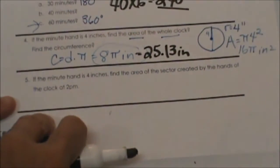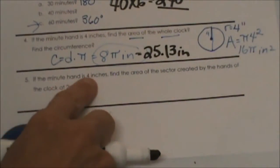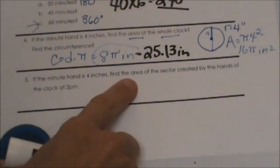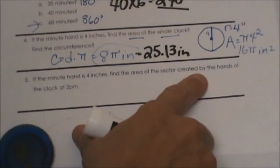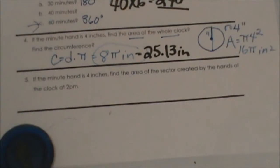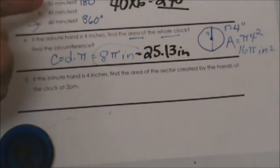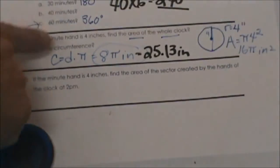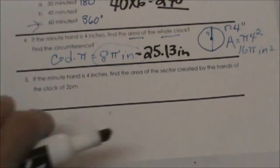Number 5 says if the minute hand is 4 inches, find the area of the sector created by the hands of the clock at 2 o'clock. So we actually have to take the information from 3 and 4 and put it together. So we are looking at the same clock that we were looking at earlier.